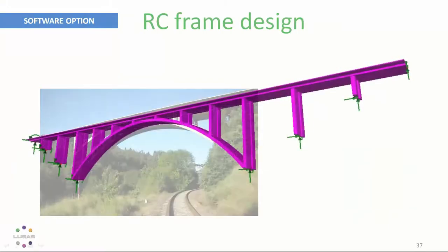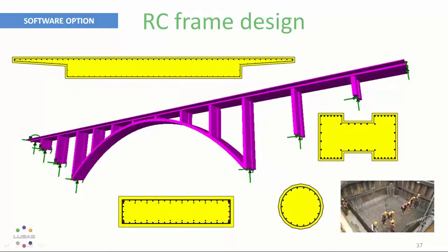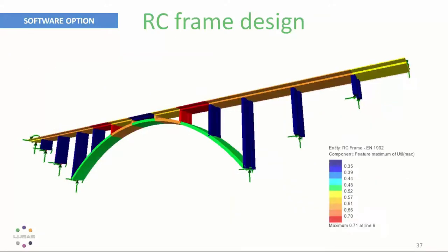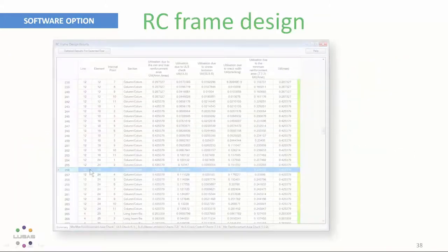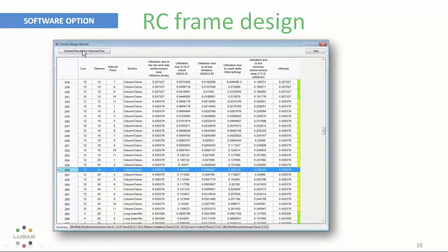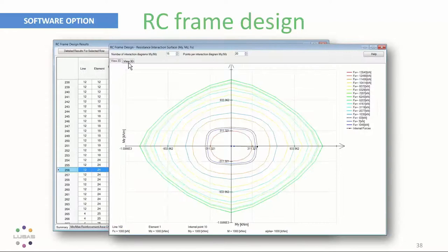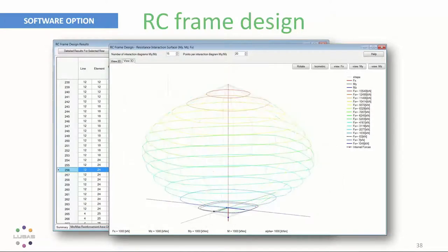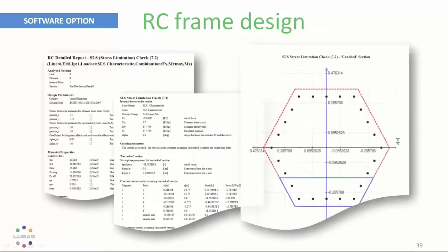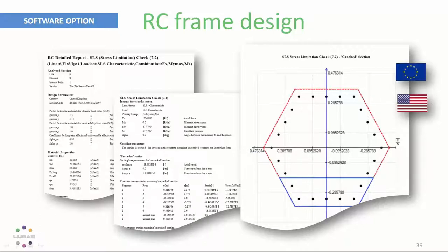So the RC designer offers ultimate limit state and serviceability limit state checks, including crack widths for biaxial bending together with overall tension or compression for reinforced concrete beams or columns or piles. In fact, any shape of cross section and any reinforcement arrangement. And you can view utilization contours. But you can also examine the calculations for any location.